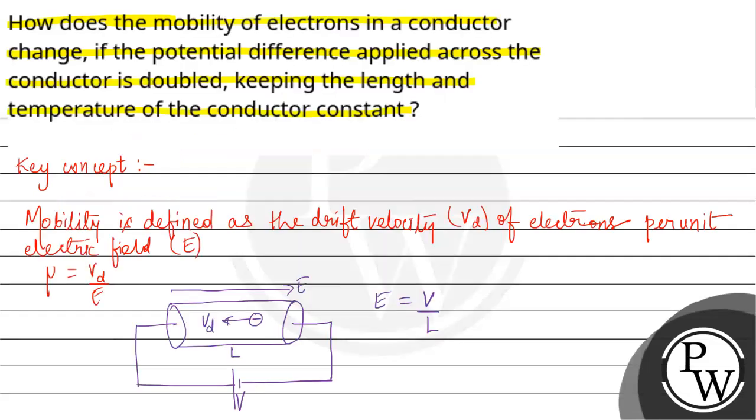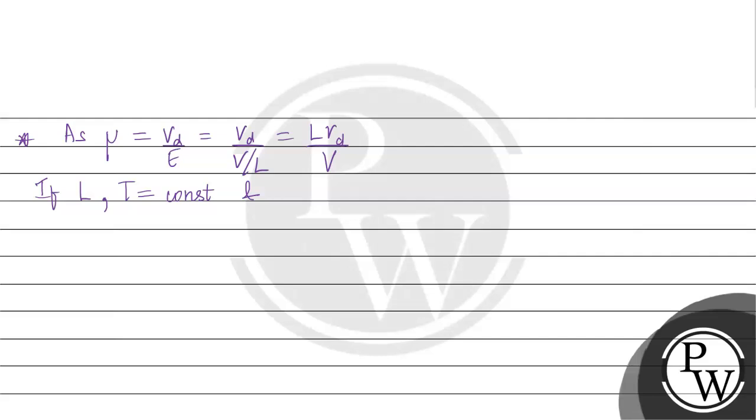When the potential is doubled, the new potential difference V dash will be twice V.